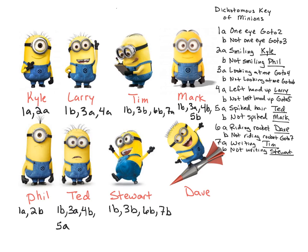And lastly we have Dave. Dave has two eyes, so that'll be one B — go to three. He is not looking at me, so that'll be three B — go to six. He is riding a rocket, so that'll be six A. And there is Dave. I have now keyed out all of the minions.